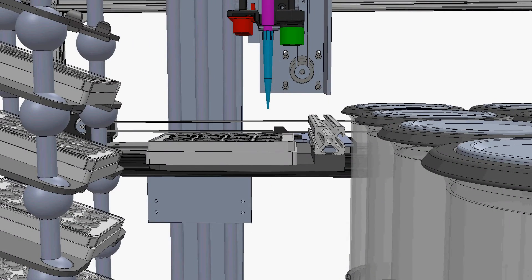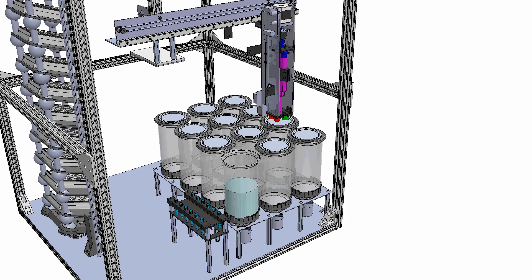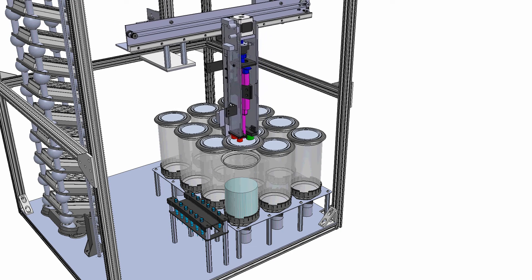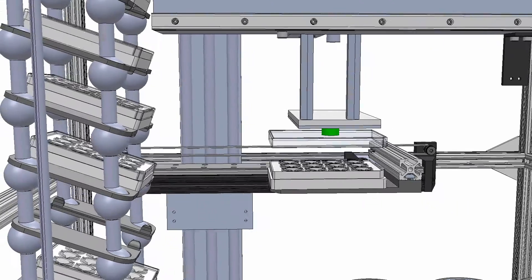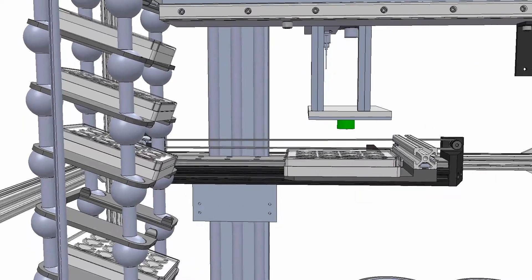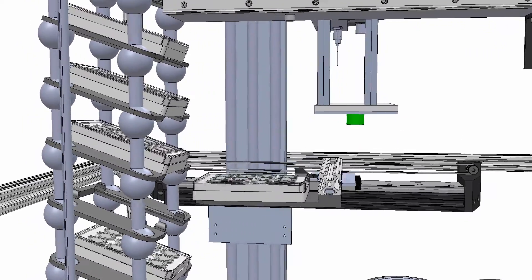The pipette is dynamically programmable and accurate to 10 microliters. The beaker lid is replaced. After all 12 of the wells are processed, the well plate is placed back in the nutating tower and the cycle repeats.